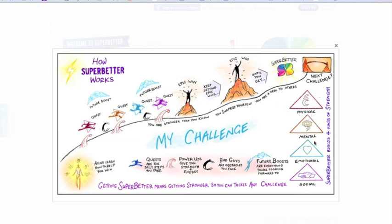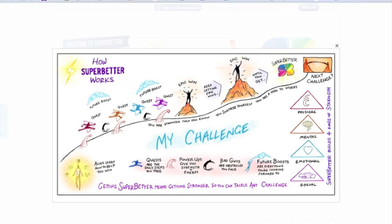The four categories are physical strength, mental strength, emotional strength, and social strength, and this helps to develop your resilience in these areas. The SuperBetter app helps you track your progress, give you suggestions, and provide feedback as you progress along your quests towards your challenge and your epic win. It does this in a way that is fun and game-like to help you stay motivated and eventually conquer your big challenge and achieve your epic win.